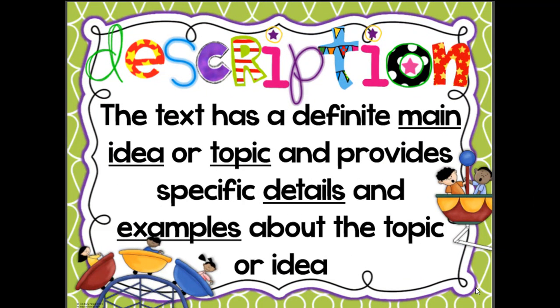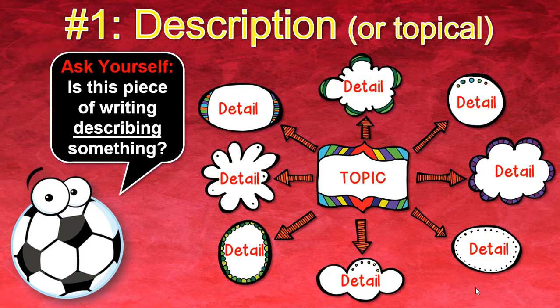Our first type of nonfiction text structure is called description, and this is the one we'll be focusing on for the next couple of days. This is a text that has a definite main idea or topic, and provides specific details and examples about that topic — it's describing something, which is where we get the word 'description.' The type of graphic organizer we use for description is like a web, with the topic in the middle and branches for each detail.